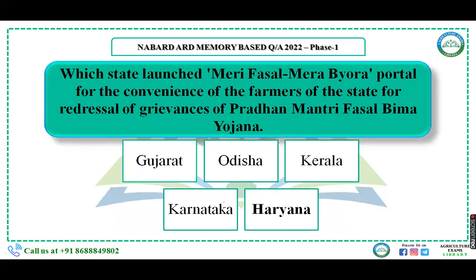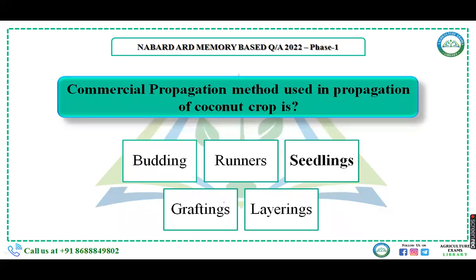Which state launched the Meri Fasal Mera Byora portal for the convenience of farmers for the redressal of grievances under Pradhan Mantri Fasal Bima Yojana? Options were Gujarat, Odisha, Kerala, Karnataka, and Haryana. The right answer is Haryana.